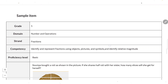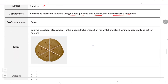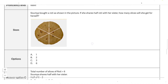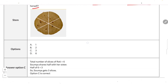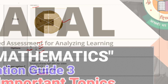Now let us see a sample question. This question is from the domain Number and Operation, standard Fraction, competency: identify and represent fractions using objects, pictures and symbols, and identify relative magnitude. The question: Somya bought a roti shown in the figure. If she shares half the roti with her sister, how many slices will she get for herself? The options are 1, 2, 3 and 6. Based on the diagram, the correct answer is option C, which is 3.